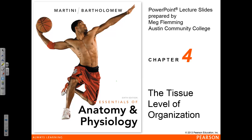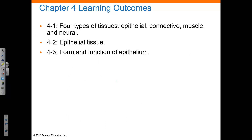This lecture will examine the tissue level of organization in the human body. This lecture segment, part one of three, will begin the discussion of the four types of tissues: epithelial tissue, connective tissue, muscle tissue, and neural tissue, with the epithelial tissue. Specifically, its form and function will be addressed.